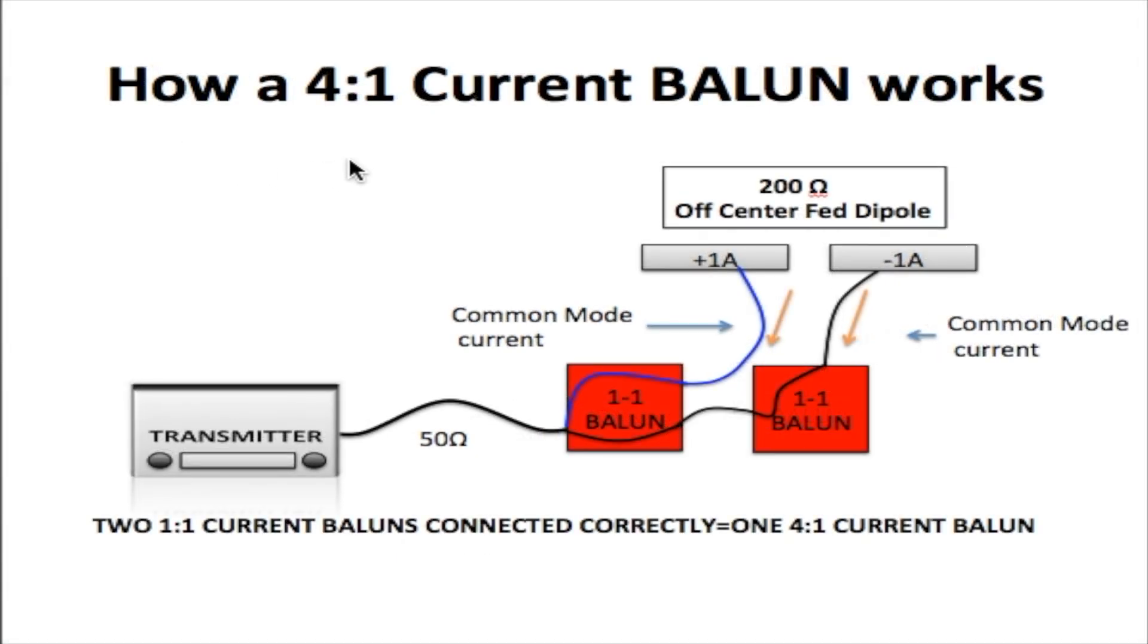Now here we have a 4:1 Balun. Now a 4:1 Balun is really two 1:1 Baluns connected together. Now once you connect them correctly, you will have a working 4:1 Balun. Now what the 4:1 Balun does that the 1:1 Balun couldn't do was that the 4:1 Balun does impedance matching. So it matches the impedance of a 50 ohm coaxial cable with the impedance of a 200 ohm antenna.